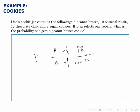So all we have to do is count the number of cookies in total, divide the number of peanut butter cookies by that, and that's our probability.